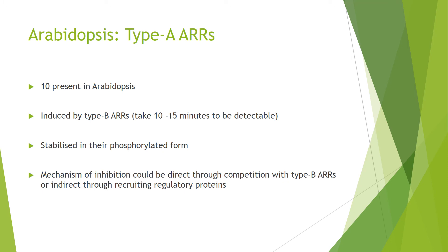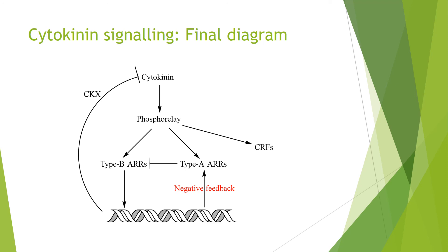Type A ARRs — there are 10 in Arabidopsis — are induced by cytokinin in two ways: transcriptional induction by type B ARRs, with transcripts detectable after 10 to 15 minutes, and stabilisation in the phosphorylated form through the phosphorelay. Their mechanism of inhibition could be through direct competition with type B ARRs or indirectly through recruiting repressive factors. The summary diagram shows cytokinin at the top, with a phosphorelay branching into cytokinin response factors, type A and type B response regulators, with type B ARRs creating negative feedback loops including cytokinin oxidases and type A ARRs.